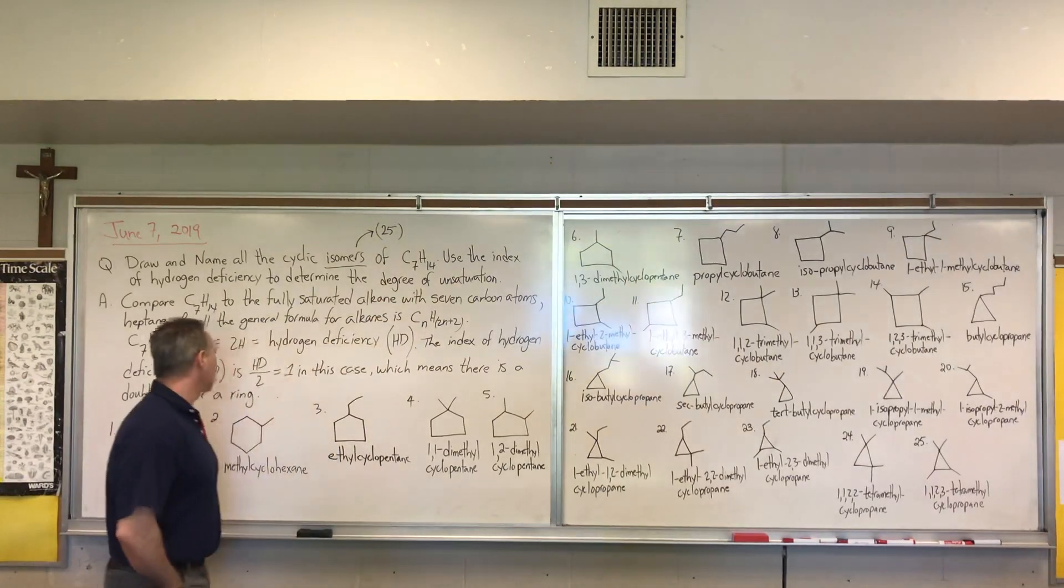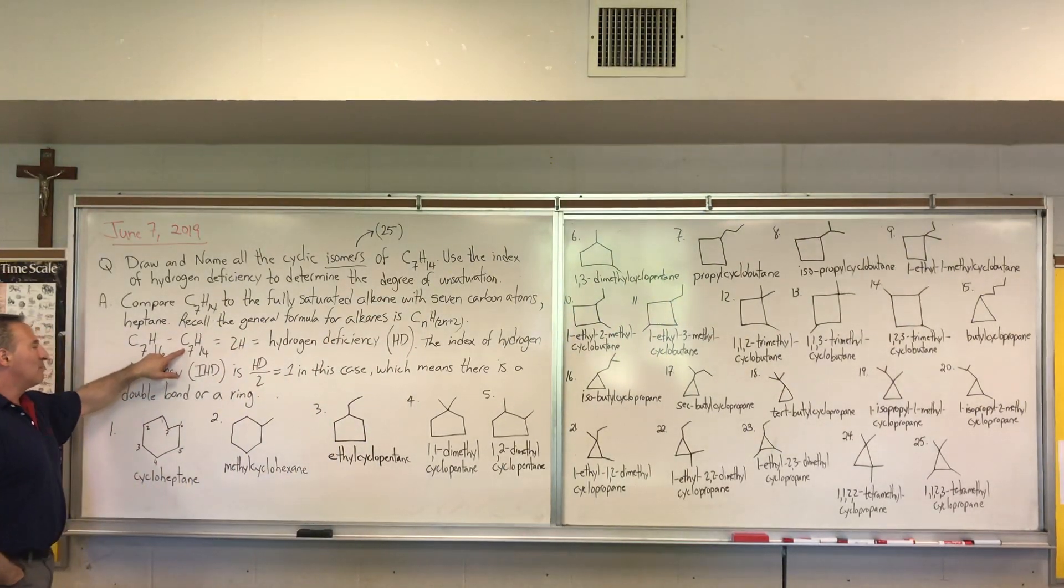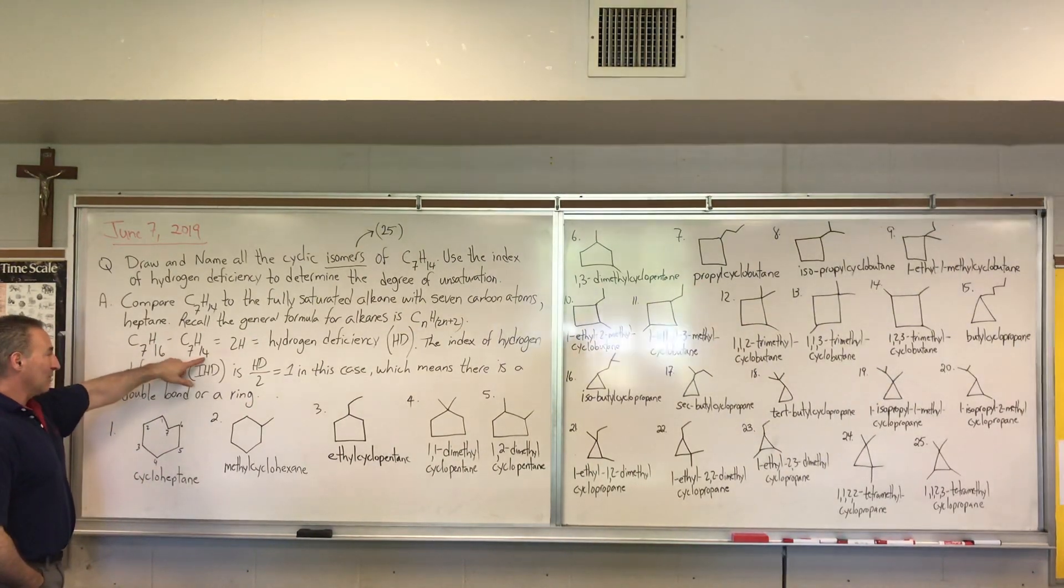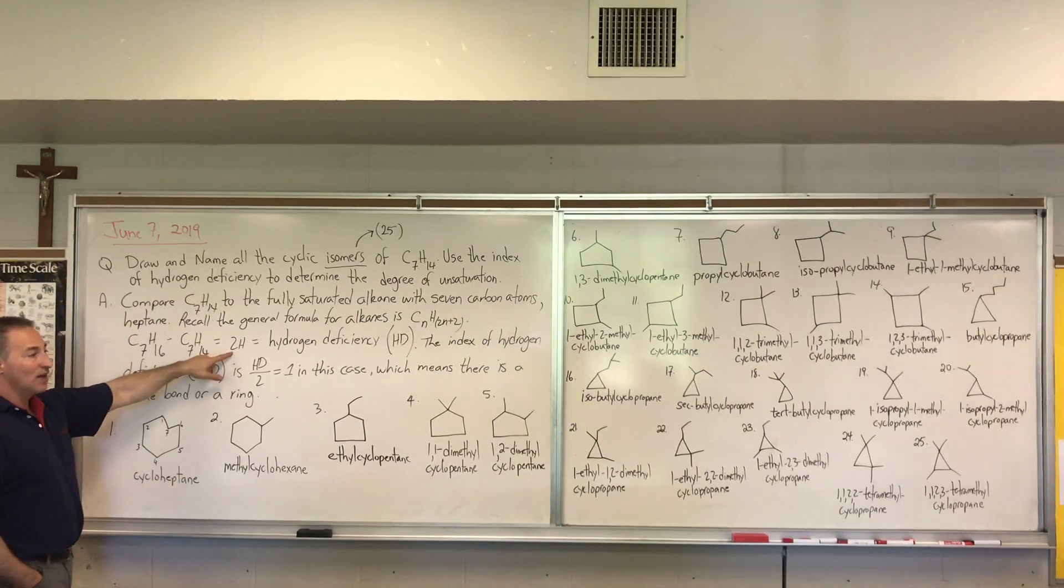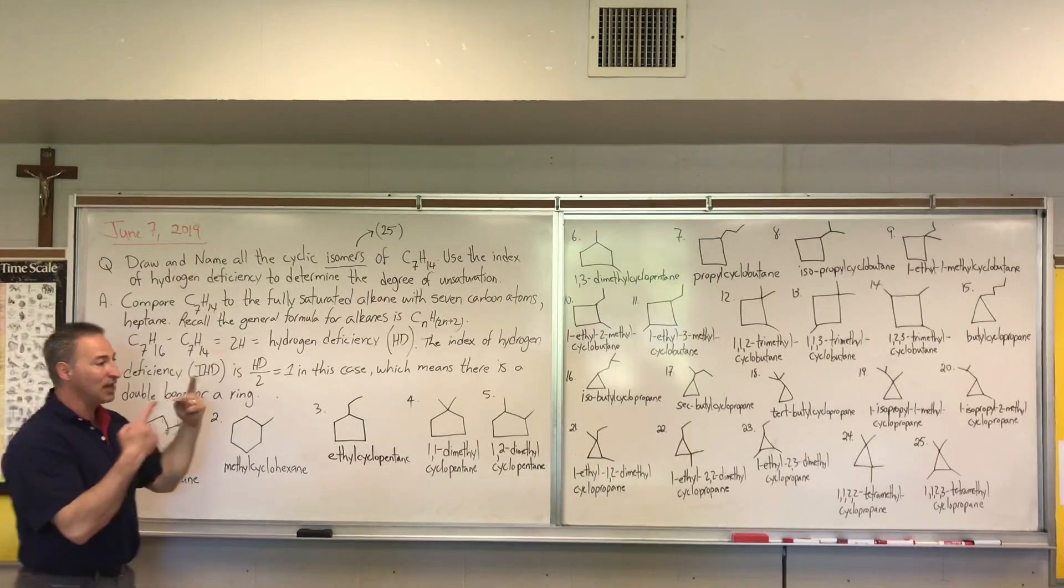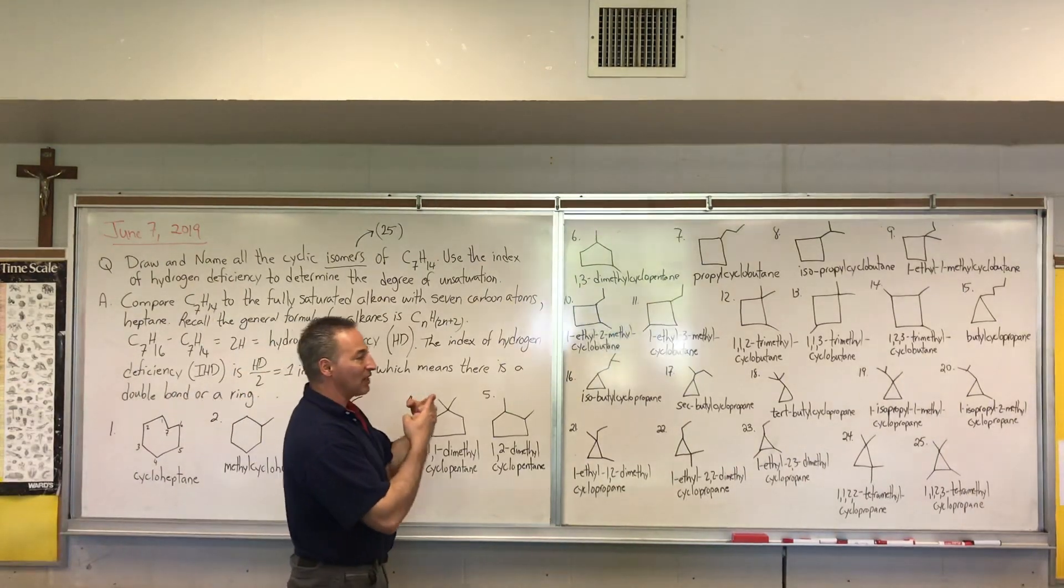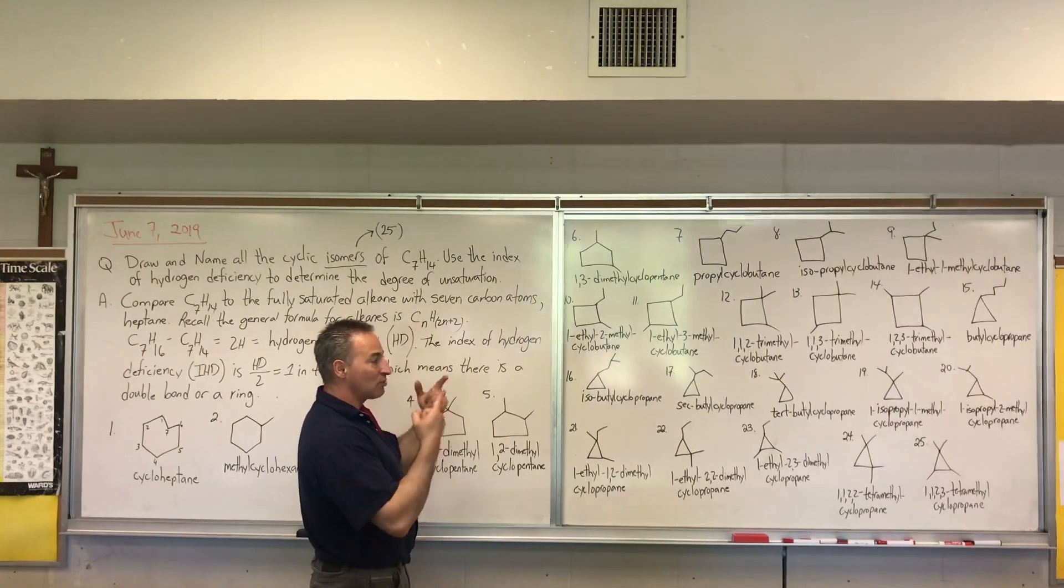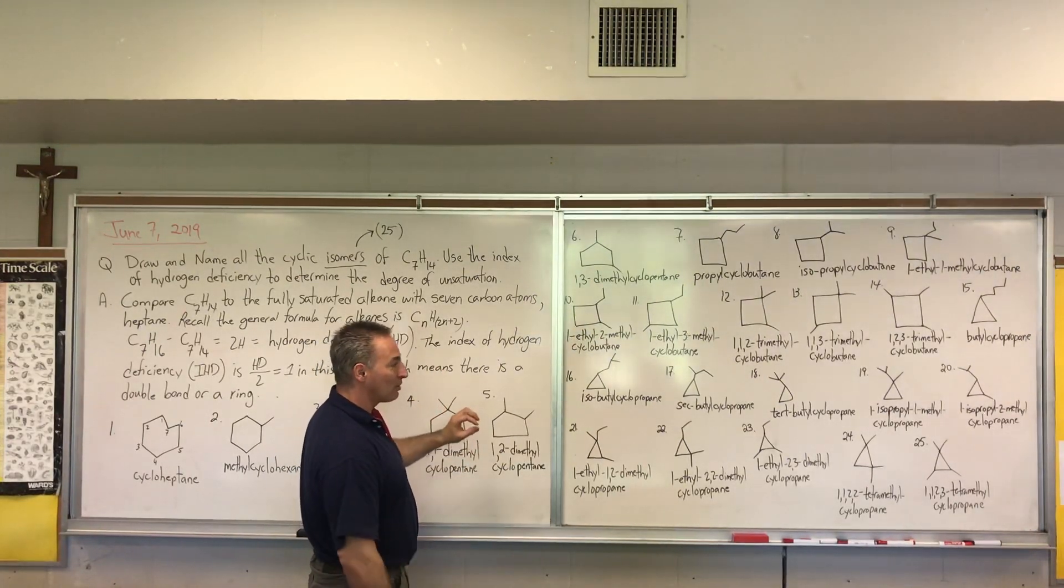So for C7, for a C7 compound, you should have 16 hydrogen atoms if it's fully saturated, meaning every carbon atom has the maximum number of hydrogen atoms attached to it. If you have less than that number, which as you do here, you have C7H14, you're missing two hydrogen atoms. What does that mean? It means you've taken two of those bonds and stuck them together to make a ring. Or it can also mean that you've taken two of those bonds and stuck them together to make a double bond.